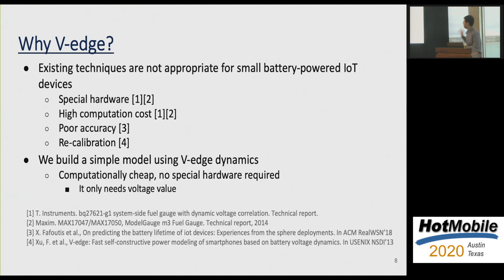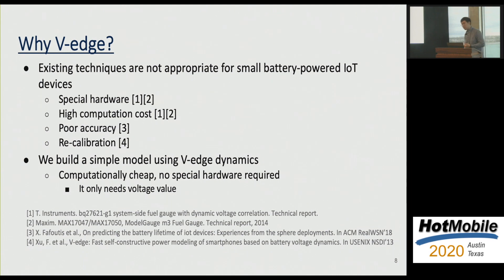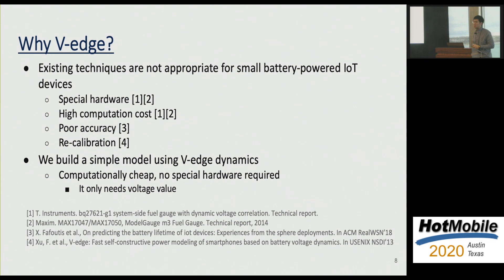Existing techniques for estimating battery capacity are not appropriate for small battery-powered IoT devices. They require additional hardware or are computationally expensive, have poor accuracy, or need frequent recalibration. This paper builds a simple model that is computationally cheap, does not require additional hardware, and only needs voltage values.